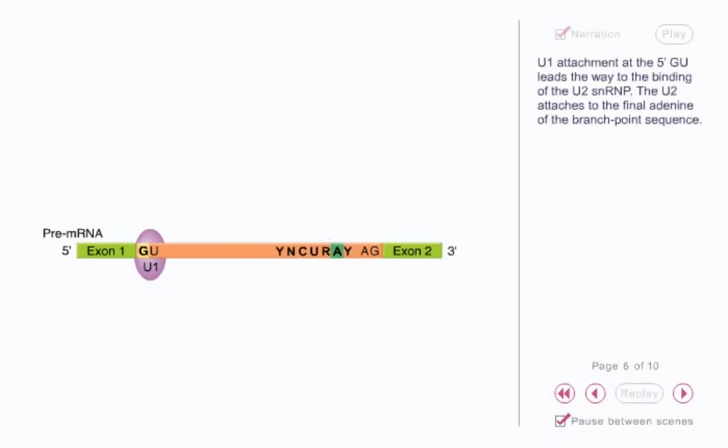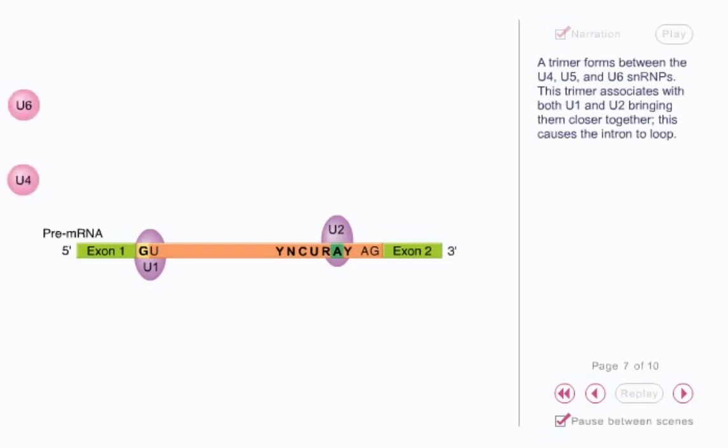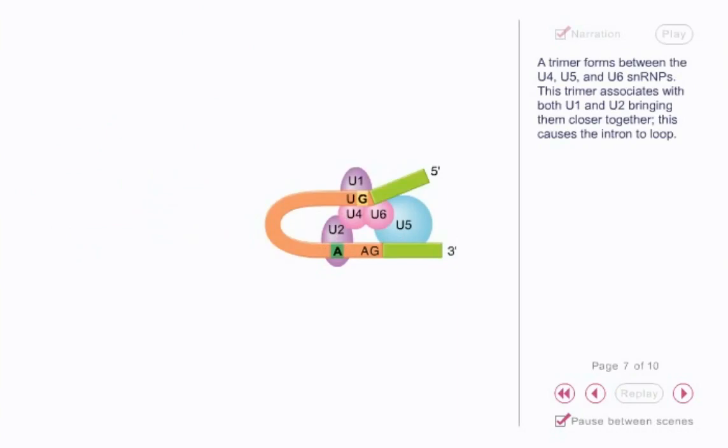U1 attachment at the 5' GU leads the way to the binding of the U2 SNRP. The U2 attaches to the final adenine of the branch point sequence. A trimer forms between the U4, U5, and U6 SNRPs. This trimer associates with both U1 and U2, bringing them closer together. This causes the intron to loop.